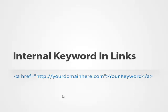Internal keywords in links: you want to link to other pages within your site — an internal page — and you want to do that one time with your keyword as the anchor text link. You'll do that using an href code: an anchor tag with href, then your domain URL, and then put in your keyword as the linked text. So your page will have a paragraph of text and then a link that says 'lose belly fat' linked to another page in your site.